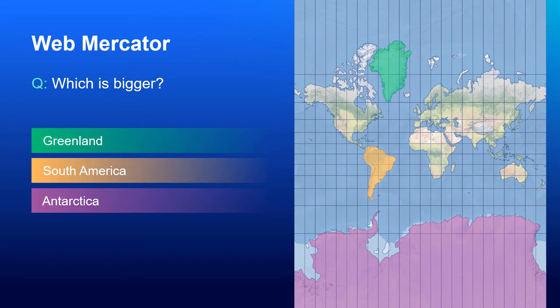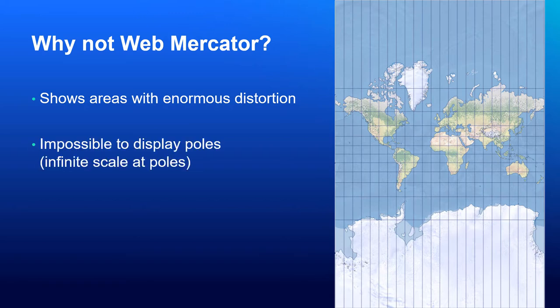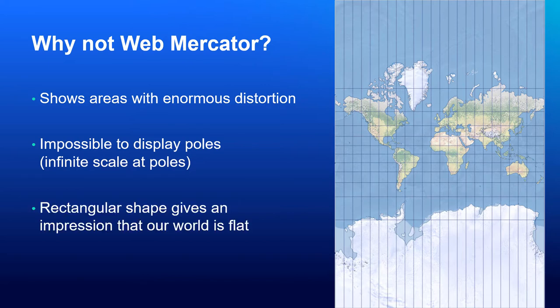Let's compare areas of three land masses on Web Mercator map. Which one is bigger? On the map, Greenland is bigger than South America and Antarctica appears to be a huge continent. But in reality, South America is bigger than Antarctica and more than eight times bigger than Greenland. Web Mercator projection has huge area distortion further away from the equator and therefore is not appropriate to render spatial analysis in it or even displaying its results. It cannot display the poles, they are projected to infinity, so planning your Arctic and Antarctic expeditions in this map is quite rough. Also, its rectangular shape gives an impression that our world is flat, which we know is not true.